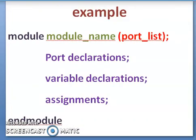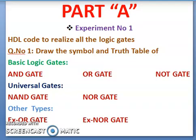This is an example of a Verilog program. The first experiment is HDL code to realize all the logic gates. In logic gates we are having basic logic gates, universal gates, and others. In basic logic gates we are having AND gate, OR gate, and NOT gate. In universal gates we are having NAND gate and NOR gate. In others we are having Exclusive OR gate.